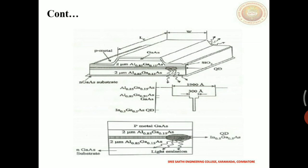In this figure, the first one represents a quantum dot laser. It has an N-doped gallium arsenide quantum dot laser which is placed near the laser diode made up of a top P metal layer of gallium arsenide and the bottom of aluminium gallium arsenide.